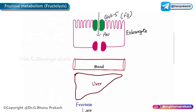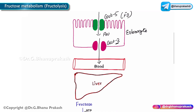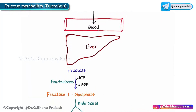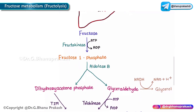The fructose inside the enterocyte then leaves the enterocyte and enters the bloodstream. This is mediated by a second transporter, glucose transporter 2 (GLUT2), which transports fructose from the enterocyte into the blood. From the blood, it enters into the liver for further metabolism, which is called fructolysis.